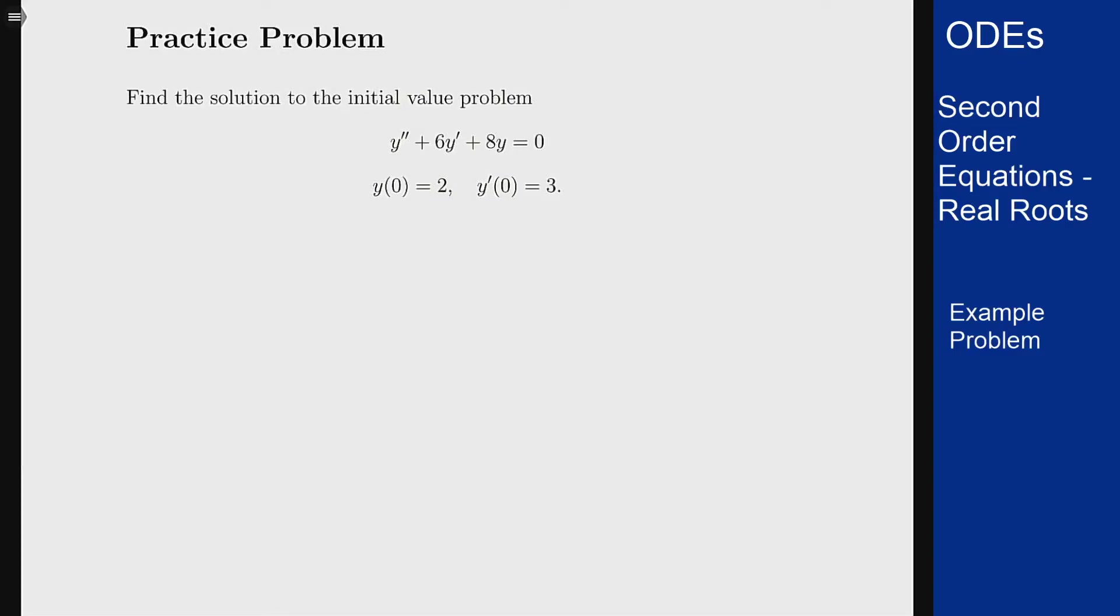In this example we want to solve the initial value problem y double prime plus 6y prime plus 8y equals 0 with y of 0 equals 2 and y prime of 0 equals 3.